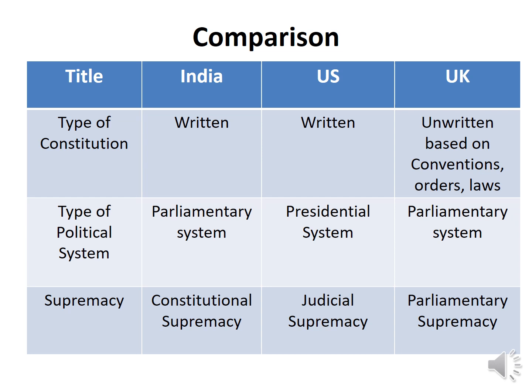In terms of political system type: India and the UK follow a parliamentary system, while the US follows a presidential system. There is a President and Vice President in the US. India adopted the parliamentary system from the UK.